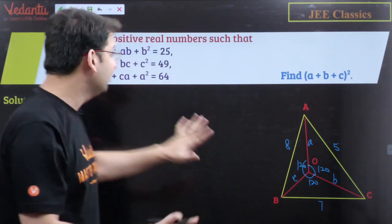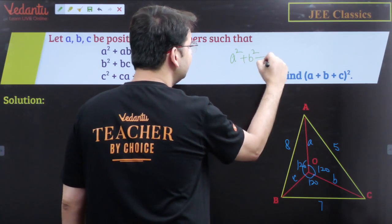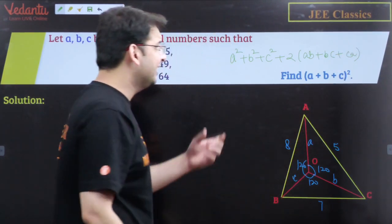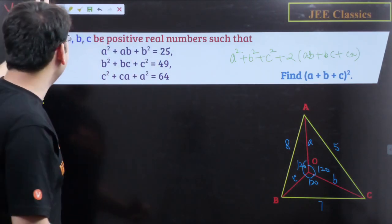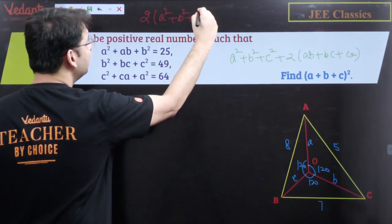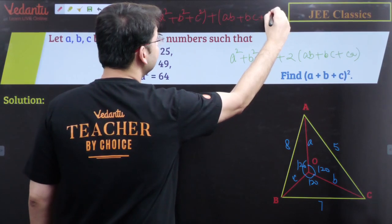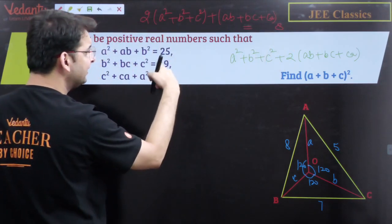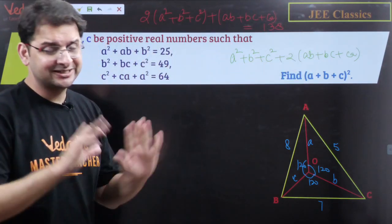Now the value we need, (A+B+C)², expands as A²+B²+C² + 2(AB+BC+CA). Adding all three given equations: (A²+AB+B²) + (B²+BC+C²) + (C²+CA+A²) = 25+49+64 = 138. This sum equals 2(A²+B²+C²) + (AB+BC+CA). So 138 = 2(A²+B²+C²) + (AB+BC+CA). We still need either AB+BC+CA or A²+B²+C² separately.